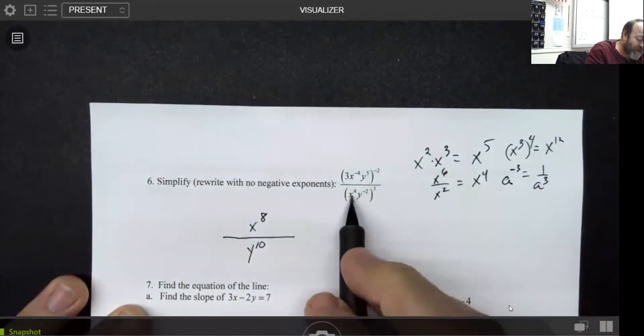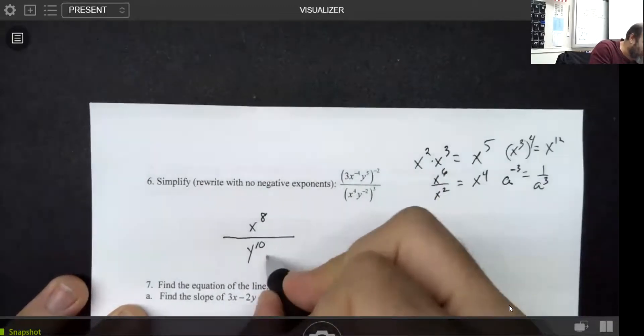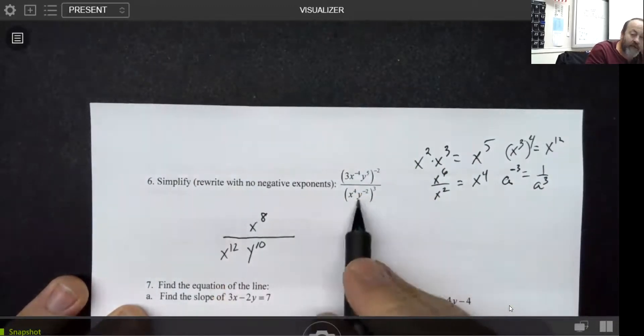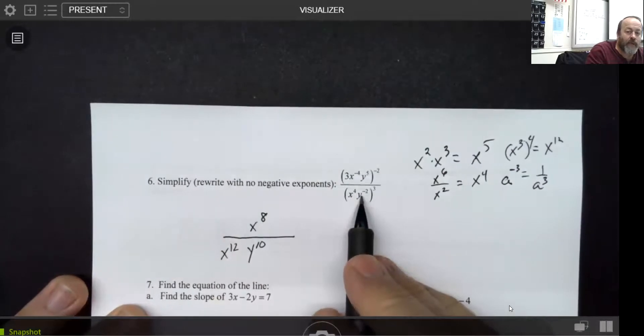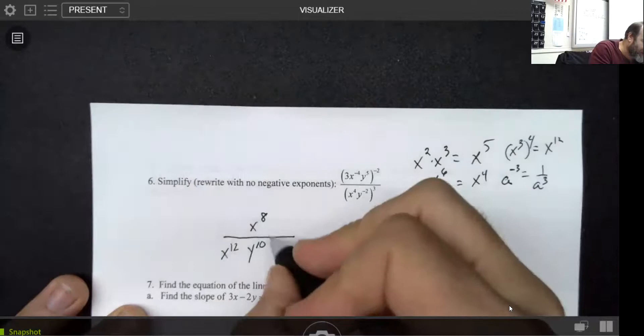Now, in the denominator, I have x to the twelfth. I'm going to leave that exactly where it is. And here I have y to the minus six that's on the bottom. But because I ended up with a negative exponent, that's going to make that y to the sixth on top.